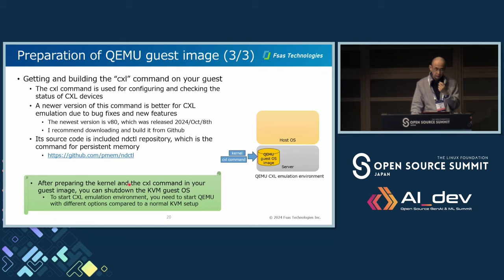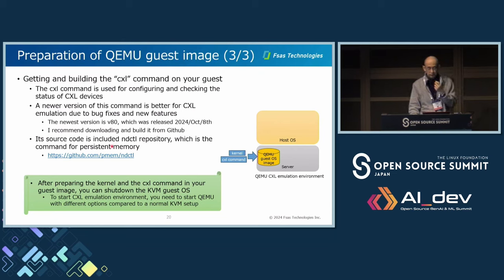Next, get and build the CXL command on your guest. The CXL command is used for configuring and checking the status of CXL devices. A newer version is better for CXL emulation due to bug fixes and new features — the newest version is v80, released this month. I recommend downloading and building it from GitHub. Its source code is included in the ndctl repository, which is also a command for persistent memory. After preparing the kernel and the CXL command in your guest image, you can shut down the KVM guest OS.